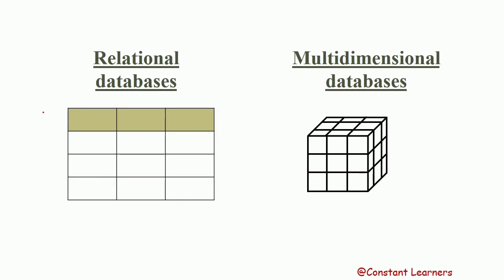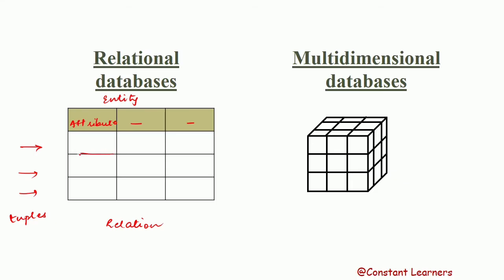The concept or theme on which a table is based is known as an entity — it is about which the data is being stored. The columns here are known as attributes, and each value in the table is stored in a cell.